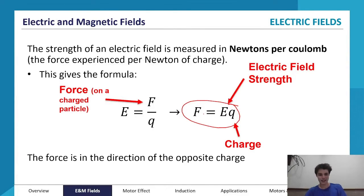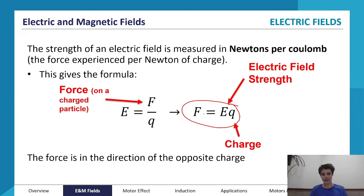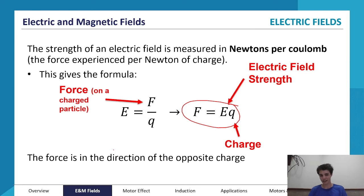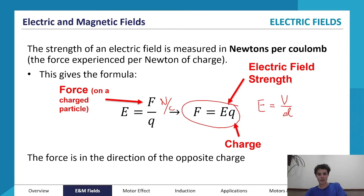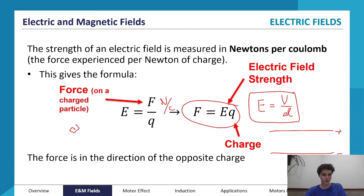The force acts in the direction of the opposite charge — for a positive charge, it directs toward the negative charge, and vice versa. The force is expressed in newtons, charge in coulombs, and the electric field can be expressed in newtons per coulomb. There's actually another equation: the electric field equals voltage divided by distance, which gives us a second way to express it.